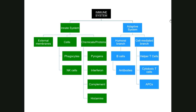We are going to continue on in this folder talking about the immune system. With our last folder, we looked at the innate system and some of its components — the system in place from birth that allows you to defend your body against microorganisms. There is a second branch known as the adaptive branch, and that's where we're going to go today.